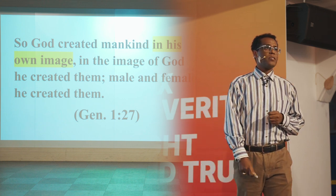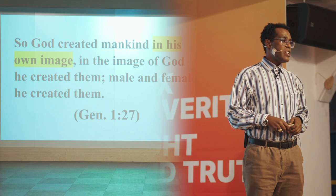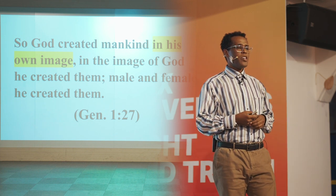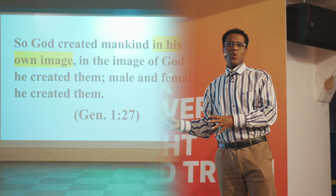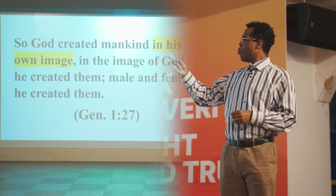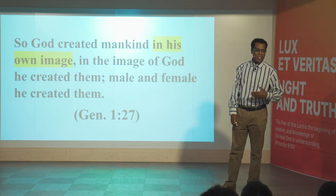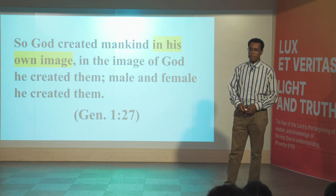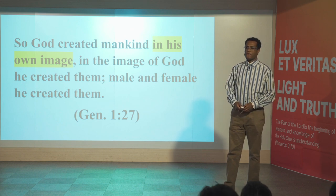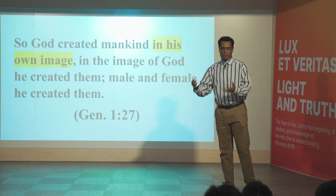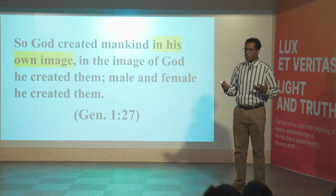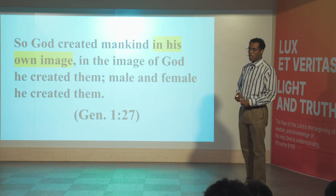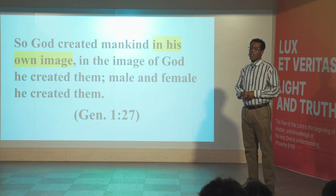So God created mankind in his own image. In the image of God he created them. Male and female he created them. But it's not easy to understand this, because when the Bible says human beings are created in the image of God and in the likeness of God — what does it mean? Is it physically that we are resembling God? Are we having the image of God in a physical way? Is it biological? Is it ontological? The debates are ongoing.